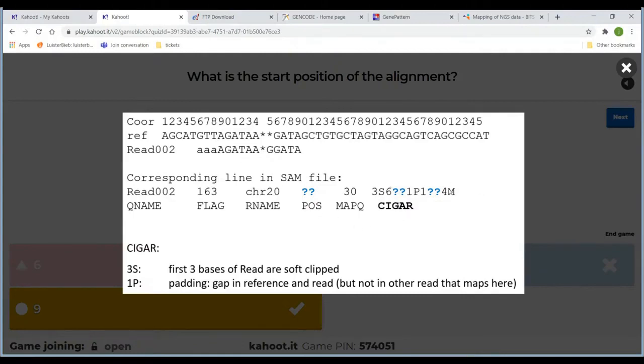And then here in the CIGAR string, you can see the three S. That means that the first three bases of your read are soft clipped. That's what S means. So three soft clipped and then we have six...